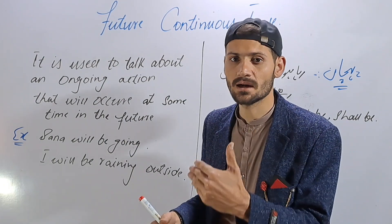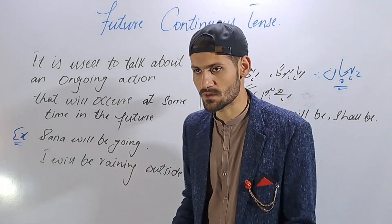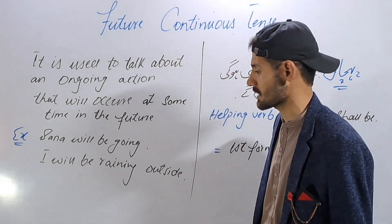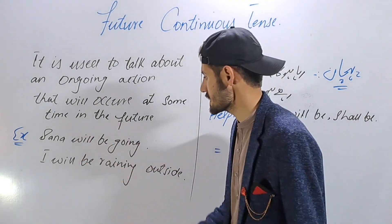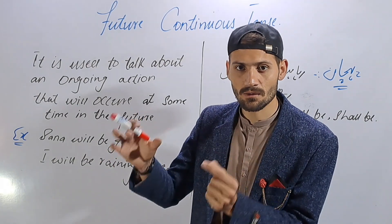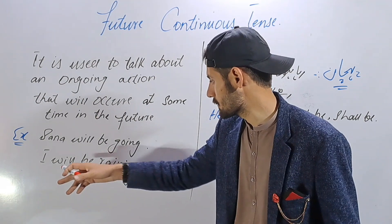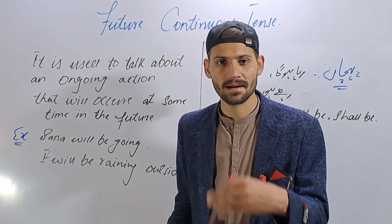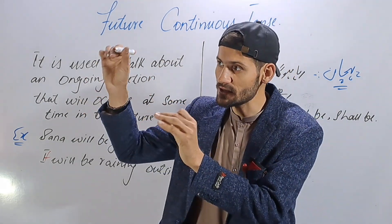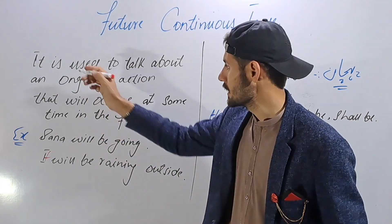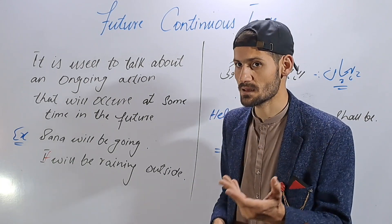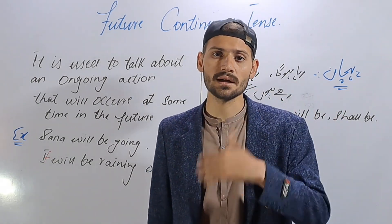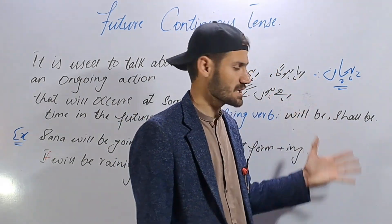Ongoing, continuity — that will occur sometime in the future. So future continuous tense means it will be an ongoing continuous action in the future. For example: 'It will be raining outside.' The definition is used to talk about an ongoing action that will occur sometime in the future.